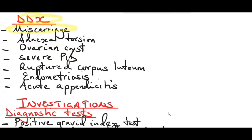Differential diagnosis of ectopic pregnancy includes: miscarriage, adnexal torsion, ruptured ovarian cyst or torsion of an ovarian cyst, severe pelvic inflammatory disease, a ruptured corpus luteum, endometriosis, or acute appendicitis.